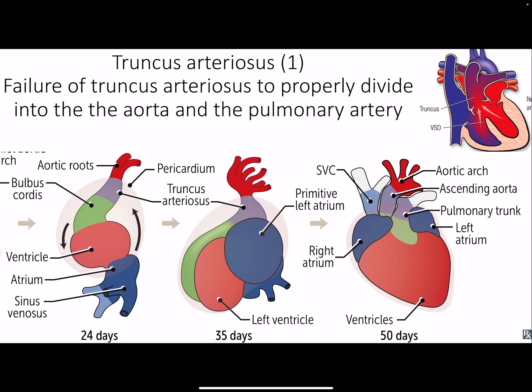Truncus arteriosus: during development, the truncus arteriosus branches off into the aorta and the pulmonary artery, which are normally separate. But with this particular birth defect, they remain merged into one vessel. Obviously, that's not good.